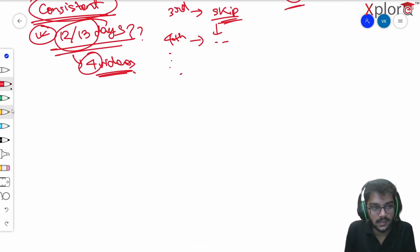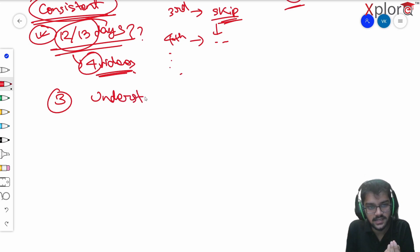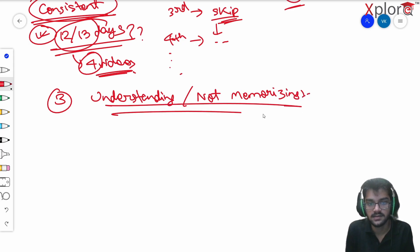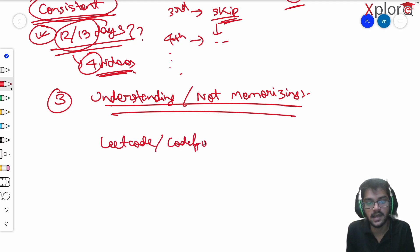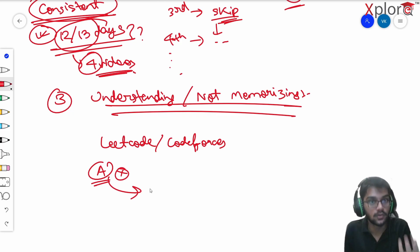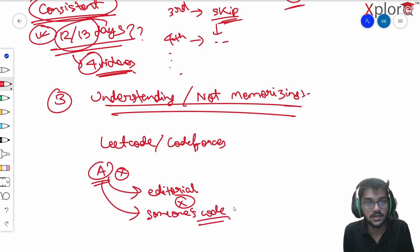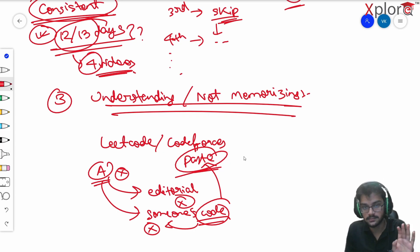The third mistake is understanding the problem versus memorizing it. Whenever we code a solution on a platform like LeetCode or Codeforces, suppose there's a problem I can't solve, so I look at the editorial. If I can't understand the editorial, I look at someone else's code. Instead of understanding that code, I just copy and paste it and get the solution accepted.